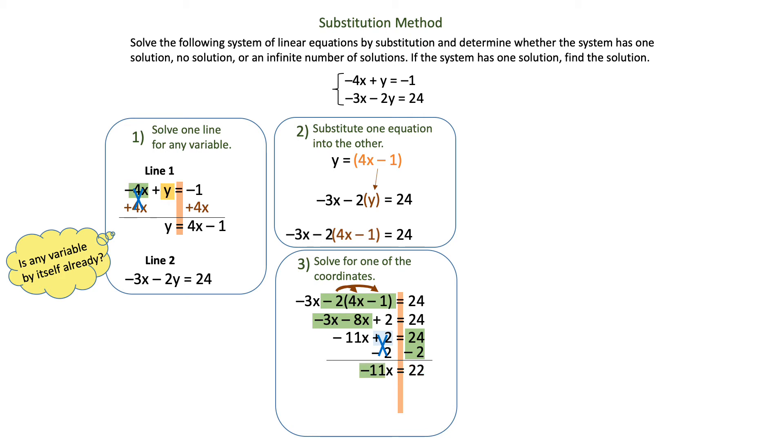Finally, I'm going to divide by negative 11 on both sides, and that will give me x is equal to negative 2.